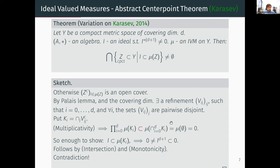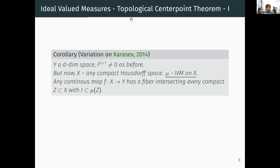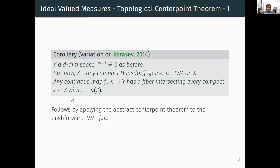The corollary is: if we have an IVM on a compact Hausdorff space and a continuous map to Y of dimension d, there is a fiber intersecting every compact set whose measure contains I. The proof uses the push-forward IVM under f and applies the abstract center point theorem, with a set-theoretic verification showing this guarantees the desired fiber.